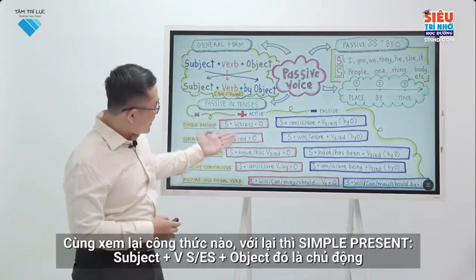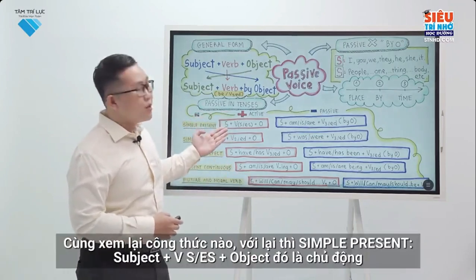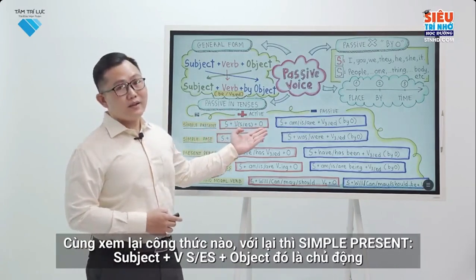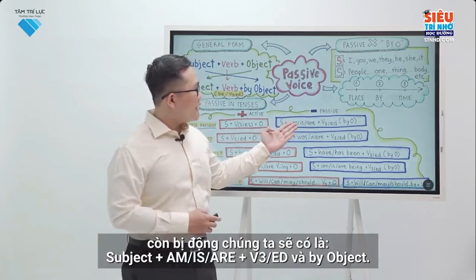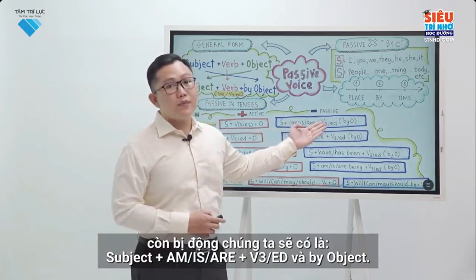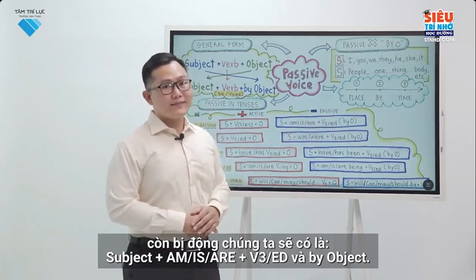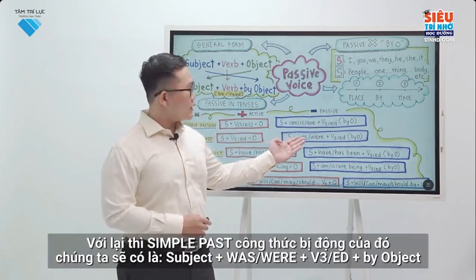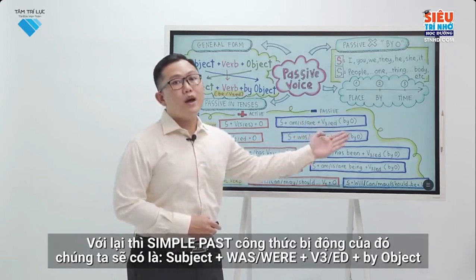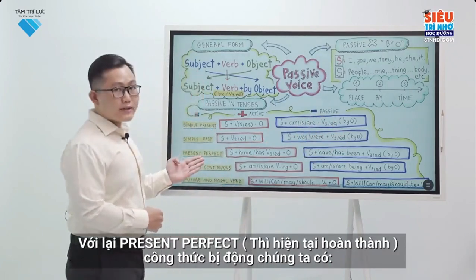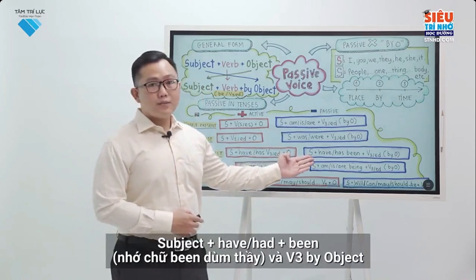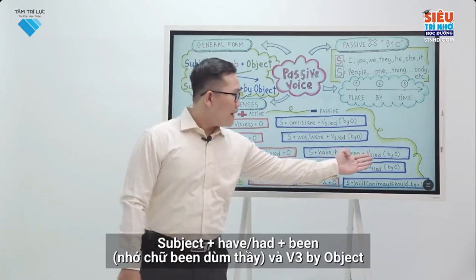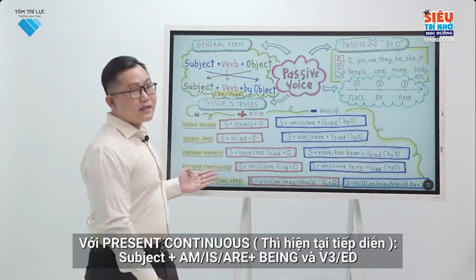The structural formula for active voice is: subject + verb + object. For passive voice, the object becomes the subject. Simple present passive: subject + am/is/are + past participle + by object. Simple past passive: subject + was/were + past participle + by object. Present perfect passive: subject + have/has + been + past participle + by object.